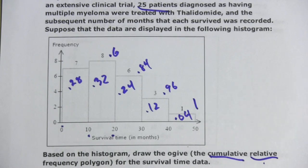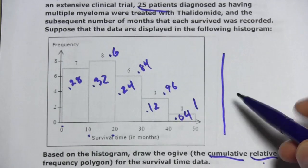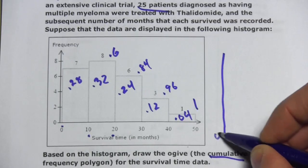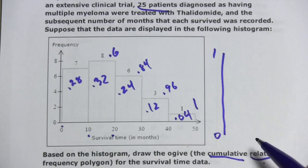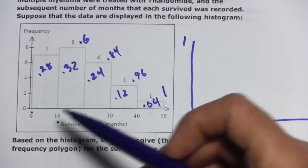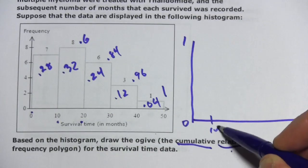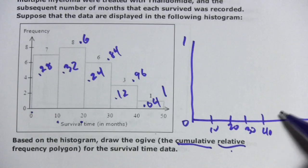Now when we draw our graph, our ogive, our left-hand axis is going to go from 0 to 1, because we're dealing with relative frequencies. And then our bottom axis is going to be just the same as the original histogram. So 0, 10, 20, 30, 40, and 50.